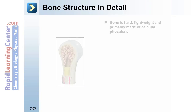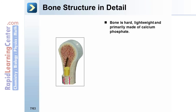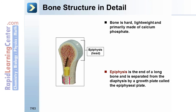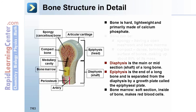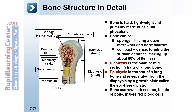Bone is hard, lightweight, and primarily made of calcium phosphate. The epiphysis is the end of a long bone and is separated from the diaphysis by a growth plate called the epiphyseal plate. The diaphysis is the main or mid-section shaft of a long bone. Bone marrow is the soft section inside of bone and makes red blood cells. Bones can be spongy, having an open meshwork, or compact, forming the surface of bones and making up about 80 percent of its mass.